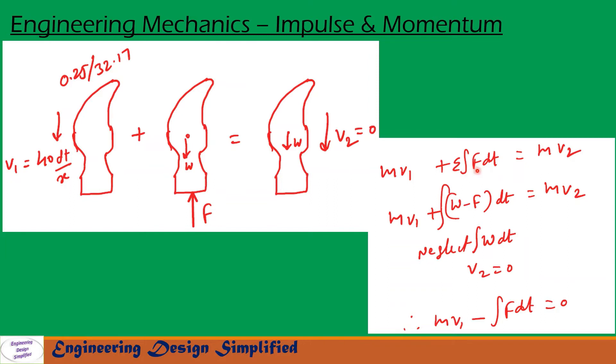That can further be written as integral of W, that is the vertical weight acting downwards, minus F, the resistive force acting upwards, into dt: integral of (W minus F) into dt.